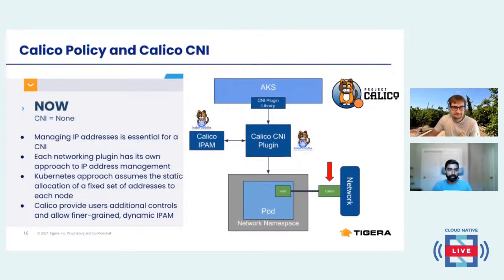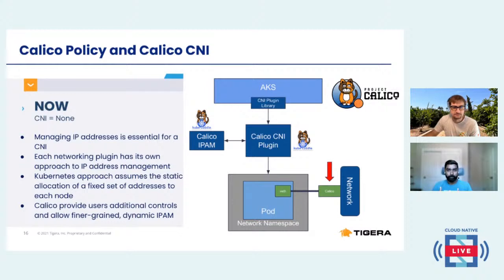CNI provides a network interface and handles communication between pods. IPAM — IP address management — simply assigns IP addresses for all the pods in the cluster. Now, with the recent announcement, you can actually choose an option of CNI equal to none, and install Calico to use as a choice for CNI and IPAM. It's a simpler approach that provides fine-grained dynamic IP address management.